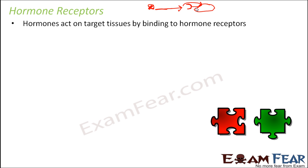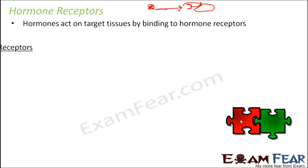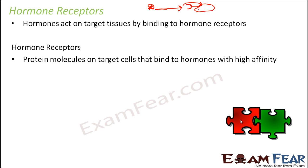It is somewhat like a puzzle block — the red piece is your hormone and the green piece is the hormone receptor. Wherever the hormone receptor is present, the hormone will go and bind to it. Structure-wise, hormone receptors are protein molecules on the target cells that bind to hormones with high affinity — they have a very strong attraction. The binding between hormones and receptors is also specific: in the blood you may have many different hormones, but only the matching hormone can bind to a given receptor.